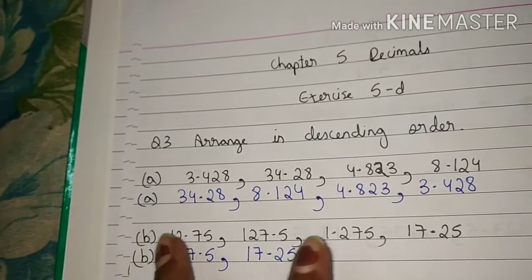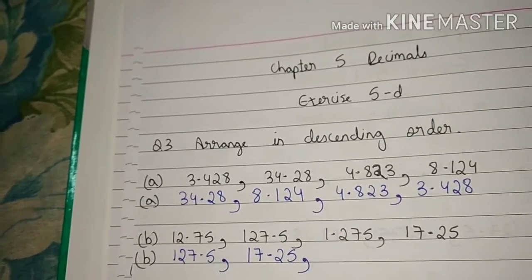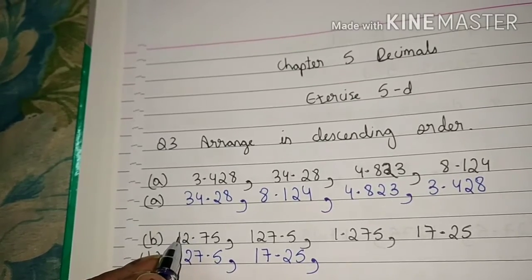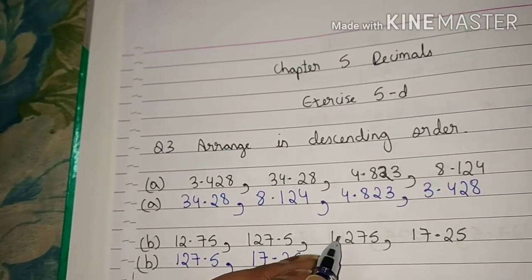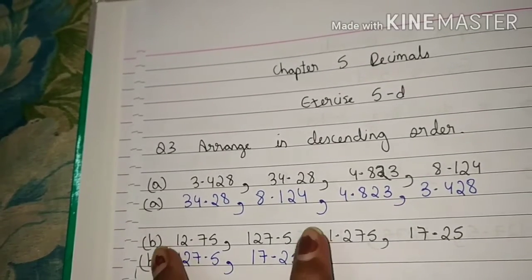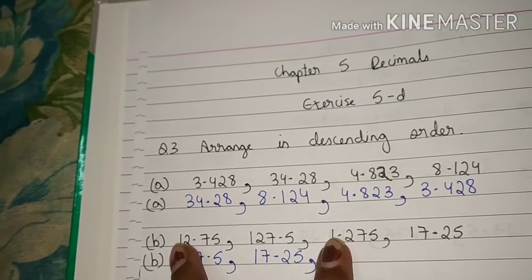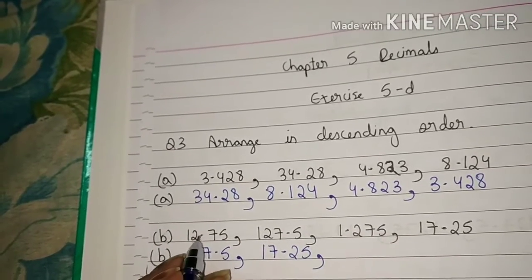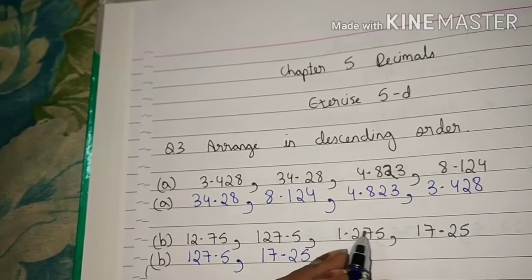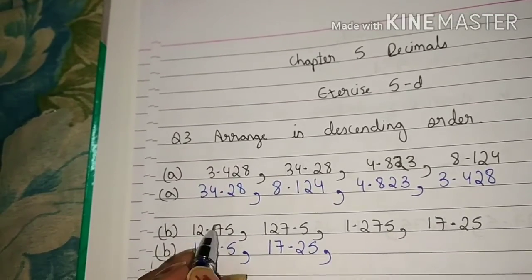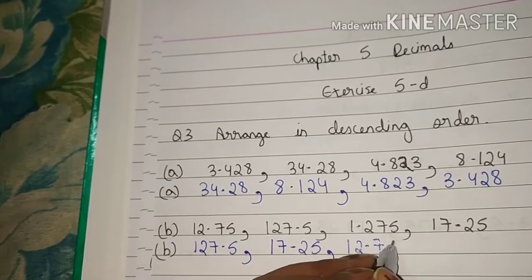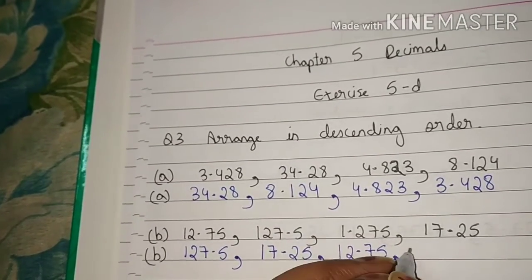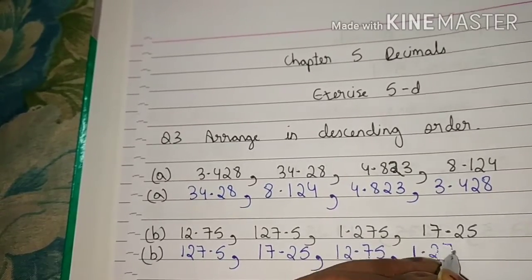We will write here 17.25. Now we will compare the remaining two numbers. Before the decimal point: 12 and 1. Which is greater? 12 is greater than 1. So 12.75 is greater than 1.275. We will write here 12.75. Now we will write 1.275 here.